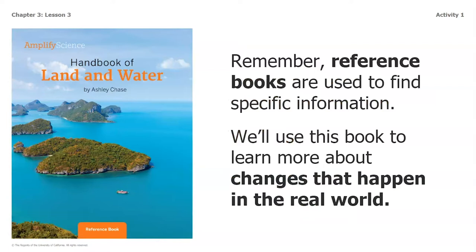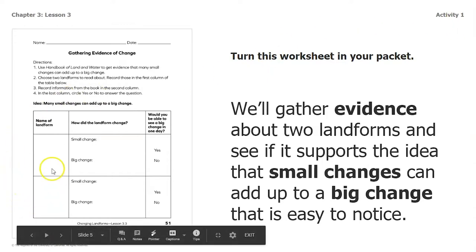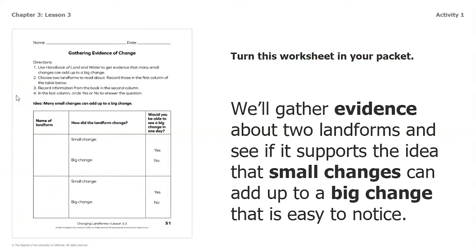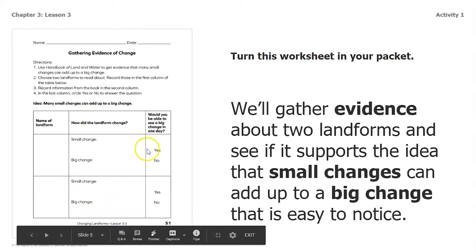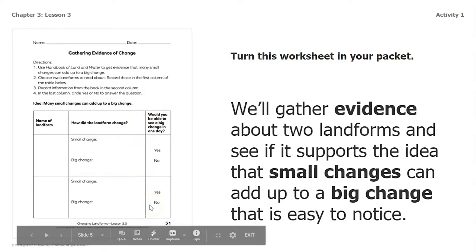Reference books are used to find specific information. We'll use this book to learn more about the changes that happen in the real world. In your packets, you have a worksheet called Gathering Evidence of Change. We're going to use the handbook of land and water to get evidence that many small changes can add up to a big change. We'll choose two landforms from the book to read about, record them in the first column under name of landform, record small changes and big changes in the second column, and then circle yes or no to answer: would you be able to see a big change in one day?